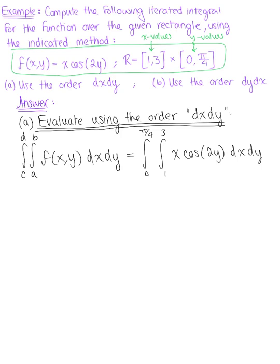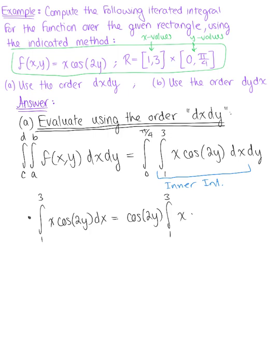Step 1, we want to take our inner integral and evaluate this. So the inner integral is 1 to 3 of x cosine(2y) dx. Since we're holding y fixed here, we can even pull this cosine(2y) to the outside. So there's cosine(2y) times the integral from 1 to 3 of x dx, and we're ready to integrate.